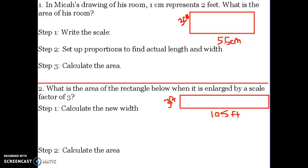Scale drawing. When you're using scale drawing to find the area, you have to use the scale that's given to you in order to multiply to find the area of the object. So number one says: in Micah's drawing of his room, one centimeter represents two feet. What is the area of his room? First thing we do is we write the scale. Scale is the drawing compared to the actual size, so this is going to be one centimeter to two feet.